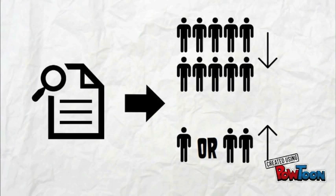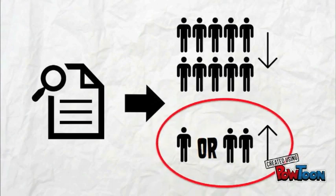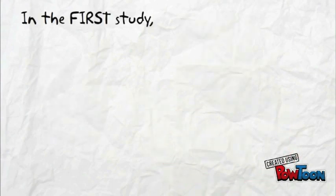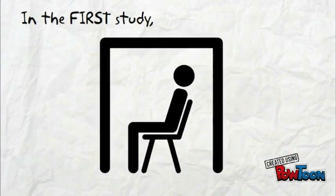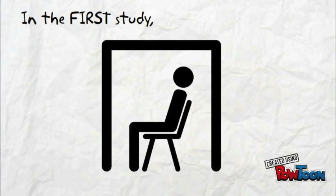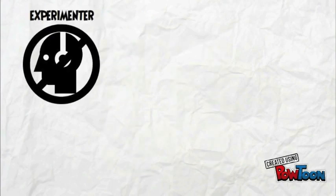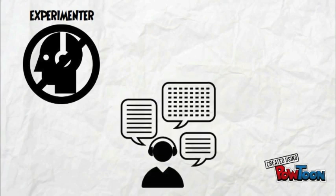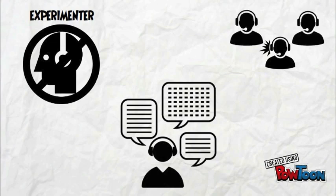In the first study, the subjects were left alone in individual rooms and any communication was done through the intercom. They were told that the experimenter would not be listening in, that their conversation would be regulated automatically and that when one microphone was on, the rest would be off.